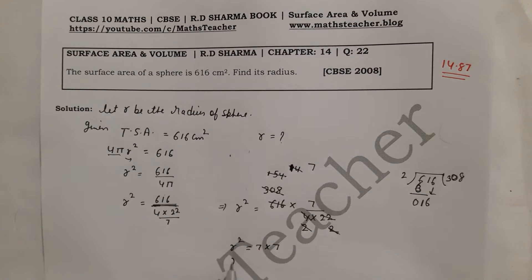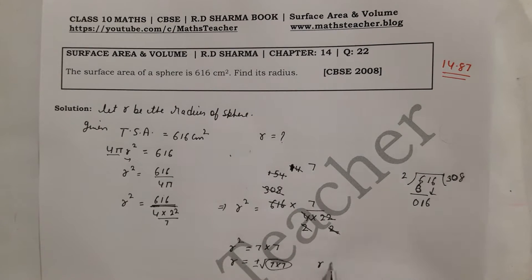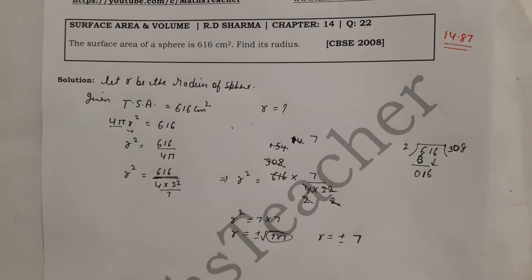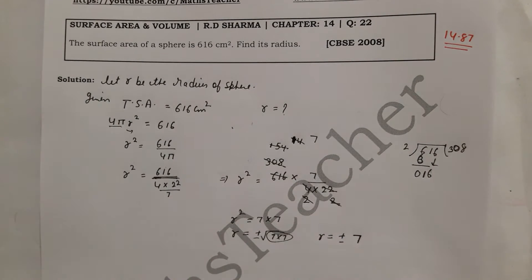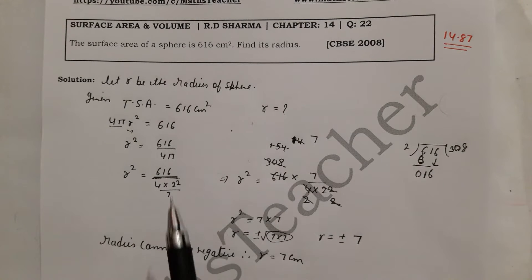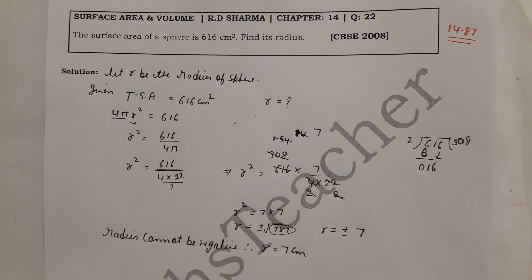So R is equal to the square root of 49, which gives ±7. Pairing the factors: the square root gives us 7. Since the radius cannot be negative, we take only the positive value. So R = 7 cm. You will be able to solve this in 1 to 2 minutes. Now, next — Question 23.